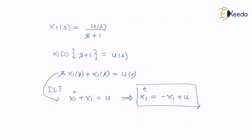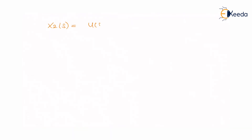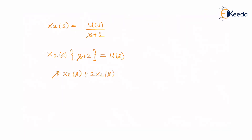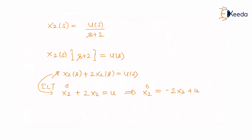Now let us concentrate on x2(s). x2(s) = u(s) upon (s+2). Using the same steps — cross-multiplying gives x2(s) × (s+2) = u(s). Expanding: s·x2(s) + 2·x2(s) = u(s). Taking the inverse Laplace transform: ẋ2 + 2x2 = u. Writing in the proper format: ẋ2 = −2x2 + u. This is the most important expression.